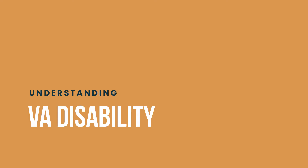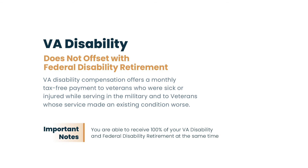VA disability is a very simple interaction with federal disability retirement. VA disability is a monthly payment from the VA if you were injured or sick while serving in the military. There is no offset and no interaction — you receive all of your VA disability and all of your federal disability retirement. This is really good news because there are a lot of federal employees who are also veterans with a VA rating. One important note: VA disability compensation is tax-free, so you don't pay taxes on that income.